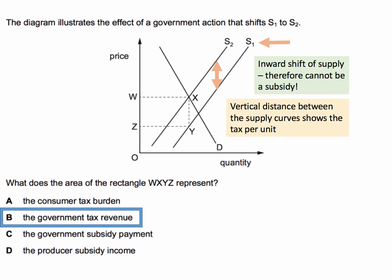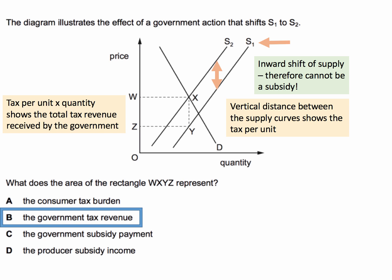The vertical distance between the two supply curves shows the tax per unit. In this case, a specific tax has been introduced into the market. That vertical distance is constant across both supply curves, so the vertical distance XY shows tax per unit. If we multiply the tax per unit by the quantity, that gives us the total tax revenue received by the government, which is indeed area WXYZ.